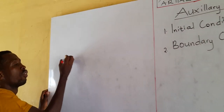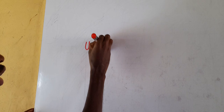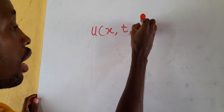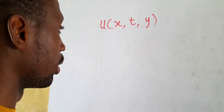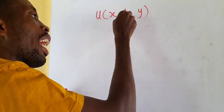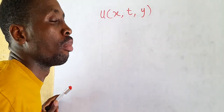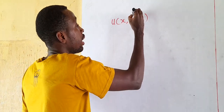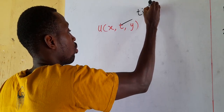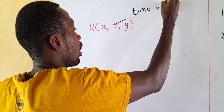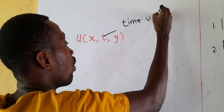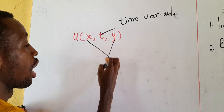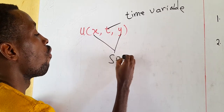Now, if we have a dependent variable u that is dependent on x, y, and t — where t is the time variable and x and y are known as spatial (partial) variables — take careful notice of this distinction. T is the time variable; x and y are the spatial variables.